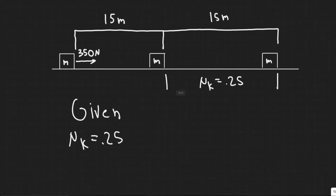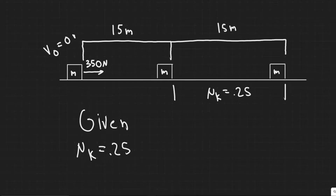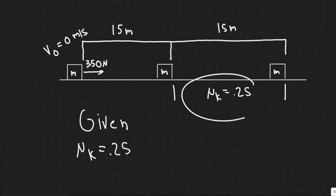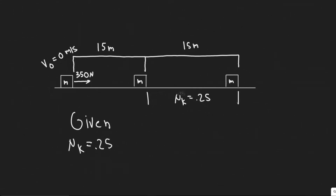First let's understand what's going on by drawing it. We have this crate, and we know it starts at rest, so V-naught is 0 meters per second. It's going to be pulled with a force of 350 newtons for 15 meters. Then at that 15-meter point, there's going to be some friction — frictionless for the first section, then friction for the next 15 meters. We're trying to find the speed of the crate at the end, so V equals question mark.